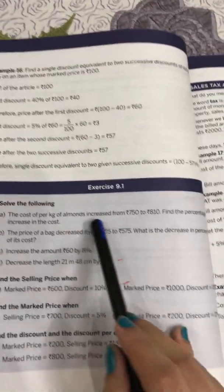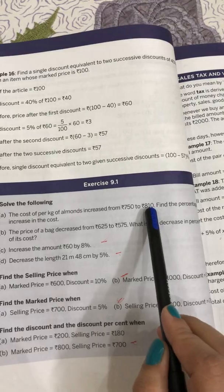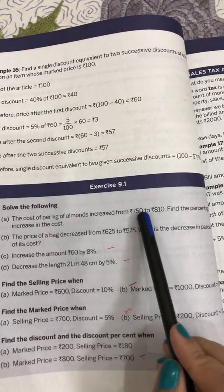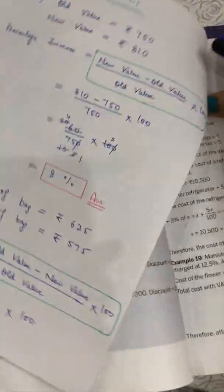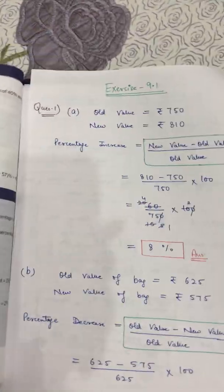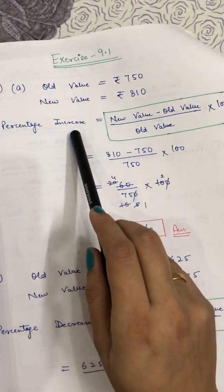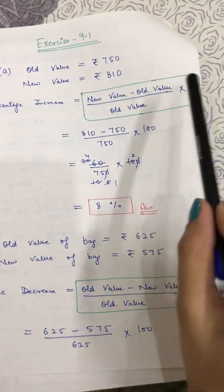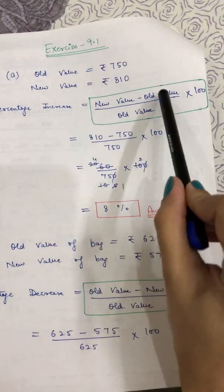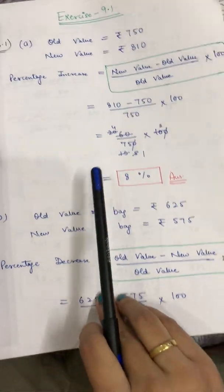Question 1 is based on word problems. The cost per kg of almonds increased from 750 rupees to 810 rupees. Find the percentage increase in the cost. So old value of almonds per kg is 750 rupees and new value is 810 rupees. Using the formula: new value minus old value, divided by old value, multiplied by 100 — put in the values, cancel the terms, and your answer will be 8 percent.